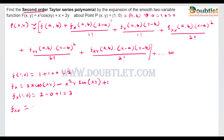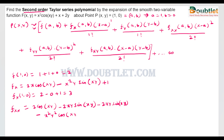For the second-order partial derivative with respect to x, differentiating again gives 2·cos(xy) − 2xy·sin(xy) − x²y²·cos(xy). To find fxx(1, 0), we put x = 1, y = 0, giving 2 − 0 − 0 = 2. So fxx(1, 0) = 2.